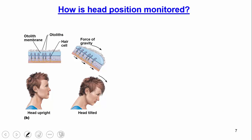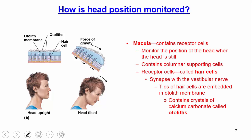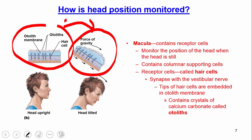The inner ear also helps us monitor head position through a structure called the macula, which contains receptor cells. It monitors the position of the head when it's still, containing columnar supporting cells. Looking at the diagram, you'll notice an otolith membrane, otoliths, and hair cells. These hair cells extend up into the fluid, which contains calcium carbonate crystals called otoliths. As someone tilts their head, the fluid shifts and bends the hairs — you can see them bent in one direction versus the other in the pictures. That's what gives you the sense of the head moving, so the macula and its receptors help monitor head position.